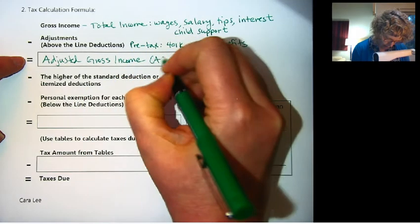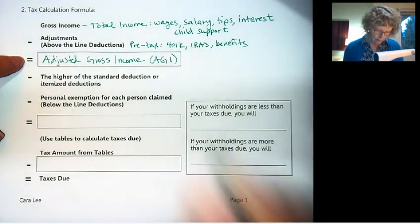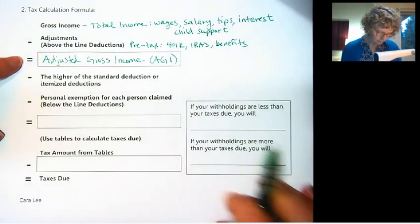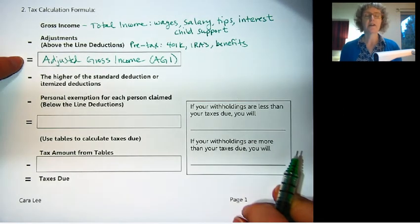Or AGI. It's your adjusted gross income. You hear that acronym a lot, AGI. But you still don't have to pay taxes on the AGI. You get to subtract two things.